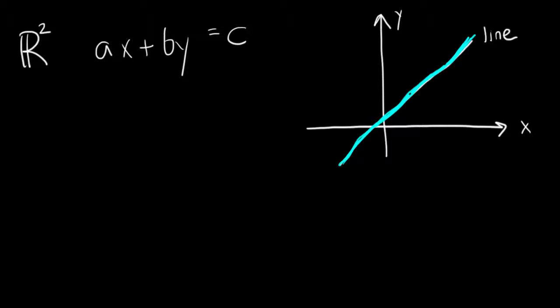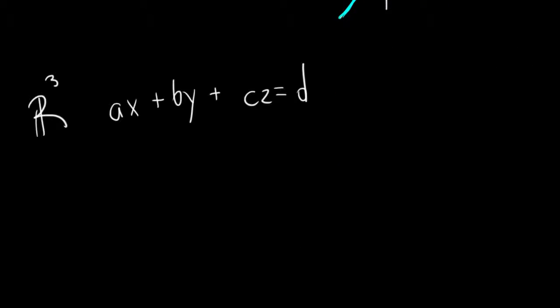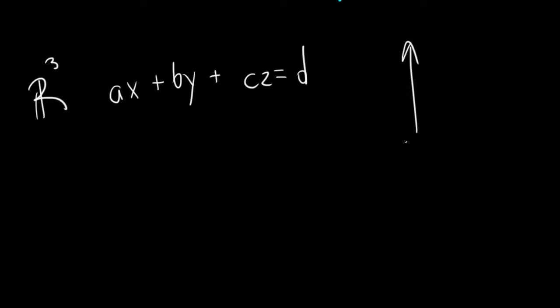If we have it in R3, we would have AX plus BY plus CZ equals D, and we'll go ahead and graph something like this out. We are going to get a plane. If we go ahead and draw this, we are going to get some plane in this space.